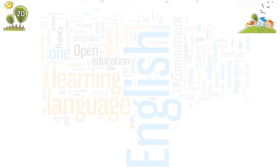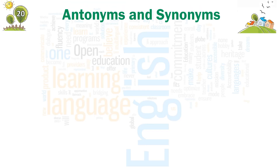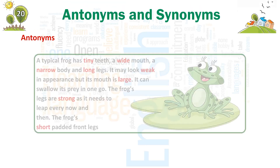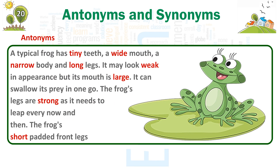Chapter 20: Antonyms and Synonyms. Antonyms. A typical frog has tiny teeth, a wide mouth, a narrow body and long legs. It may look weak in appearance, but its mouth is large. It can swallow its prey in one go.